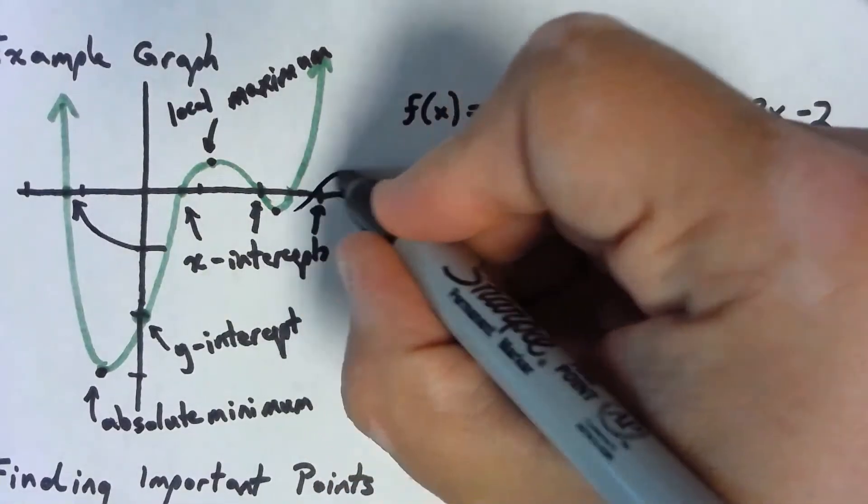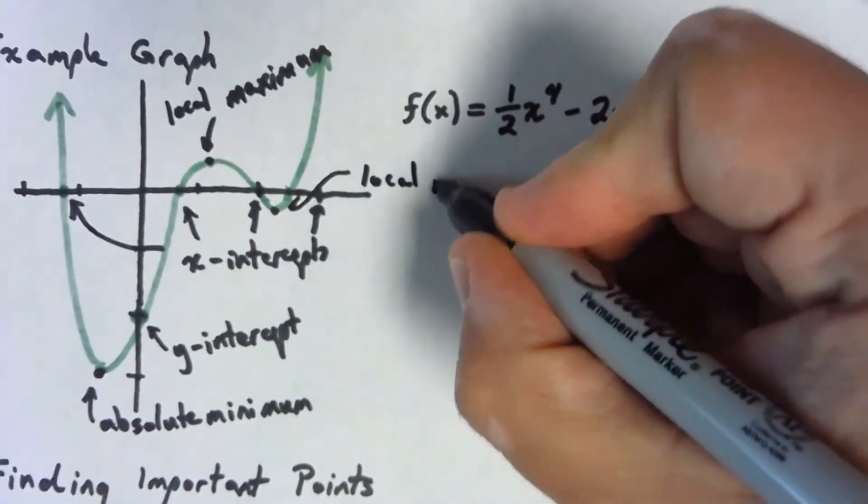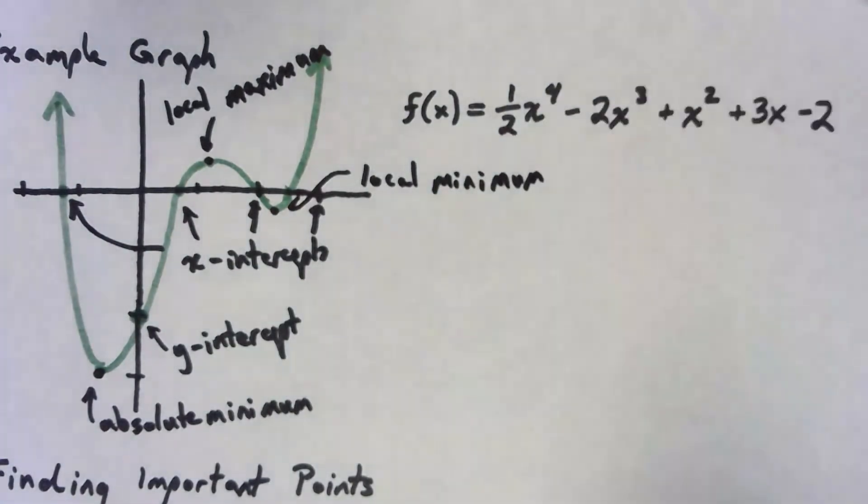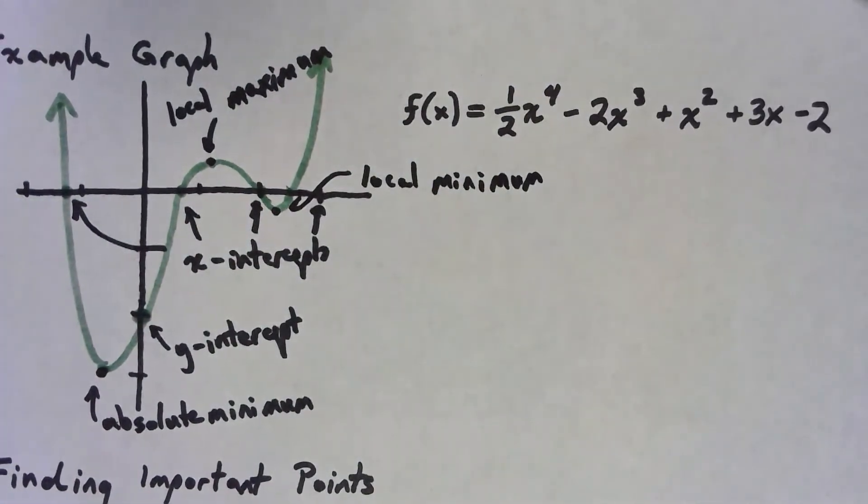Similarly, this over here would be a local minimum. These are the types of points that we really want to know in order to find a good graph for what the function looks like.